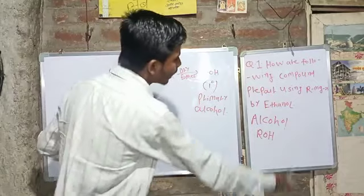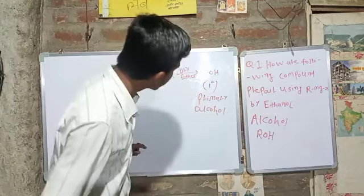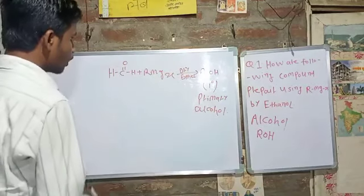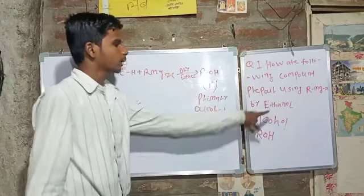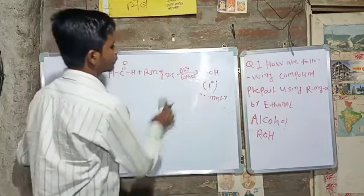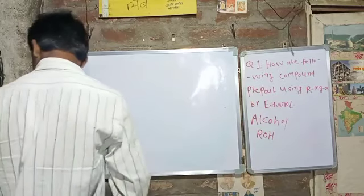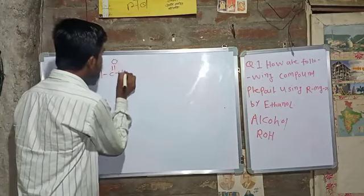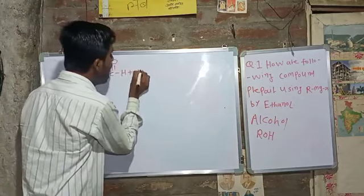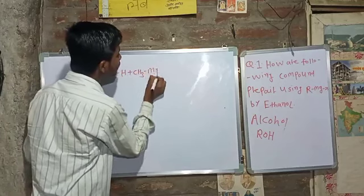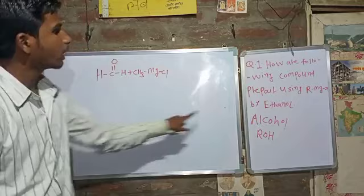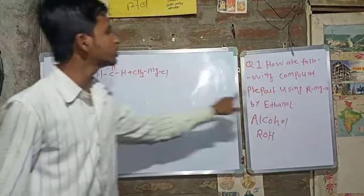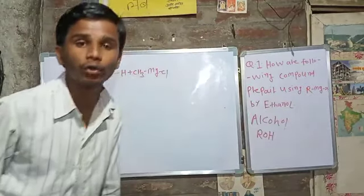Ethanol is primary alcohol. I'm going to prepare — formaldehyde plus CH3MgCl. CH3MgCl is a Grignard reagent, where the alkyl group is CH3, Mg is magnesium, and X is the halogen.